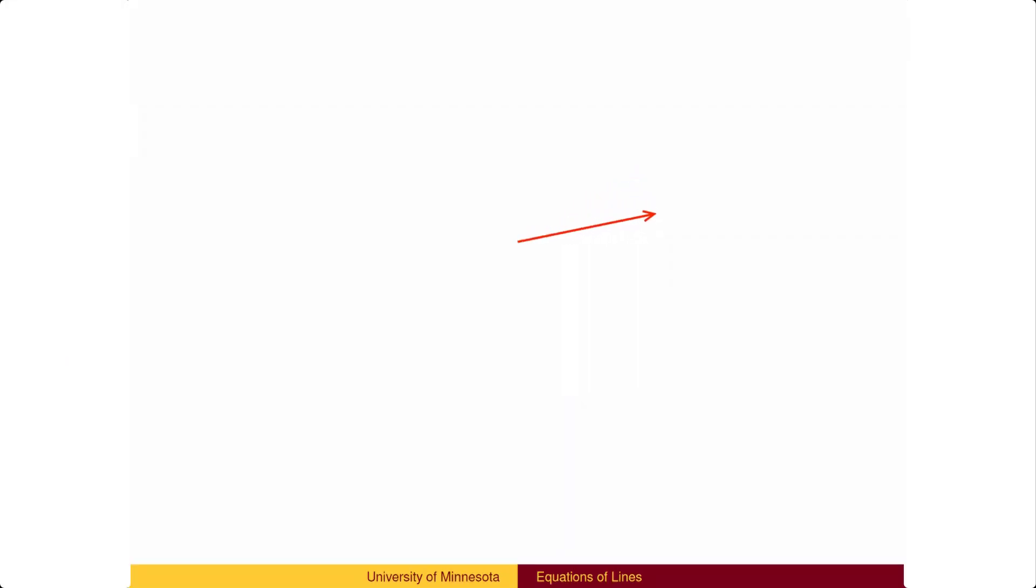In order to determine the equation of a line, we need two pieces of information. We need to know in which direction we are headed, and we need a starting point.